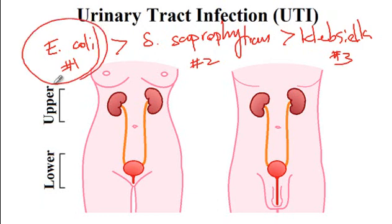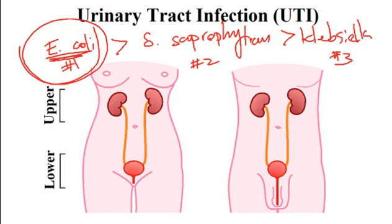The reason E. coli is number one is that E. coli is abundant in fecal matter, and given that the anus and the urethra are in close proximity, there is a higher chance of ascending infection from E. coli. You should also note that sexual intercourse is another risk factor for the development of urinary tract infection, and thus it's recommended for females to urinate after sex to help flush out bacteria that could have gotten close to the urethra during sexual intercourse.